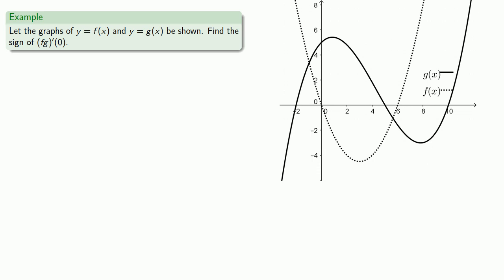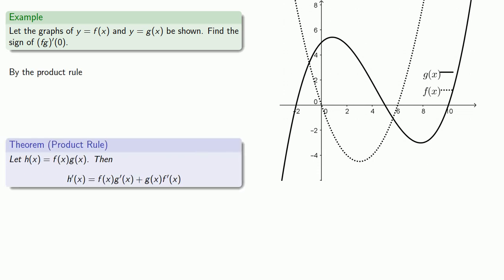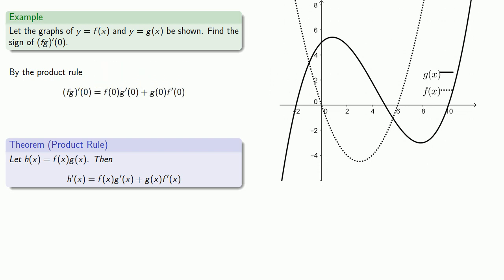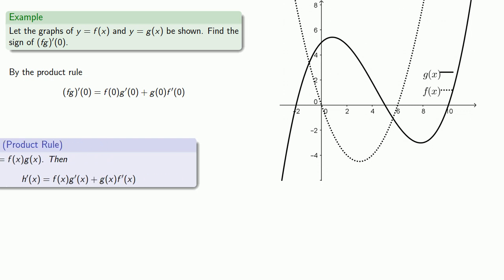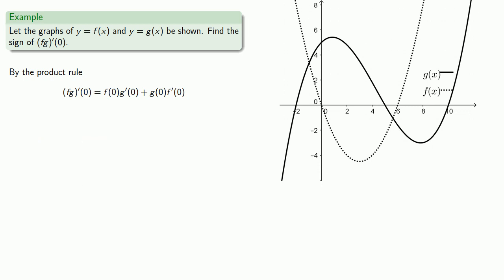Since we want to find the derivative of a product, let's go ahead and apply the product rule. Our derivative is going to be f of 0 times g prime of 0 plus g of 0 times f prime of 0. Keep in mind we're only trying to find the sign and not the actual value, so we can keep track of the signs of these four components of the derivative of the product.